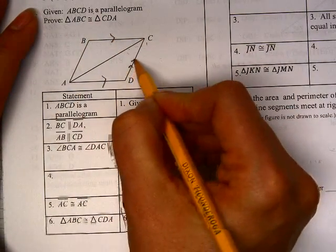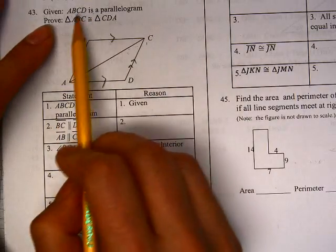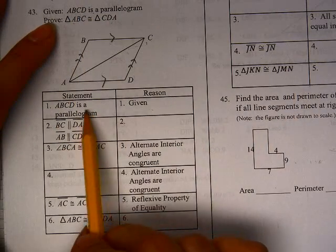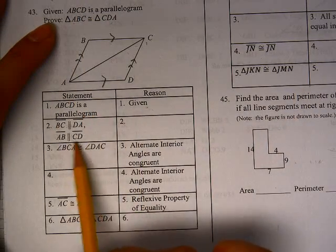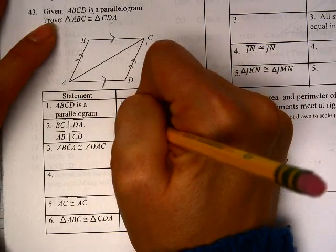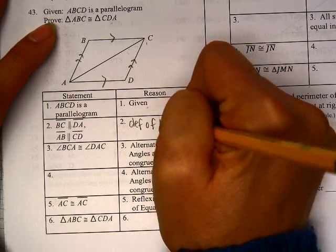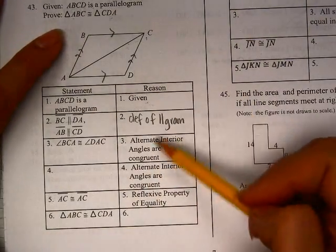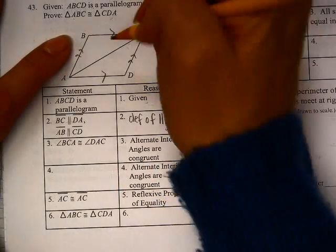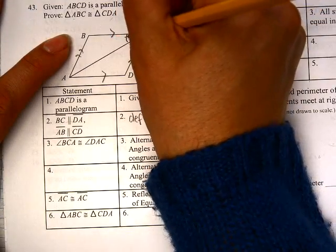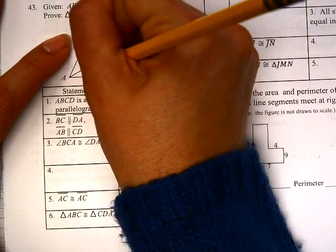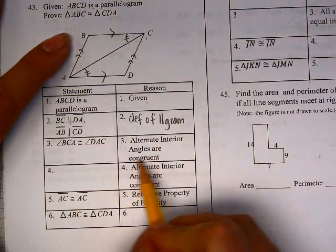This little dude is a parallelogram. Which means parallel, parallel, parallel, parallel. We're trying to prove that these two triangles are congruent. So given that it's a parallelogram, the fact that they're all parallel is the definition of parallelogram. And we should know that.